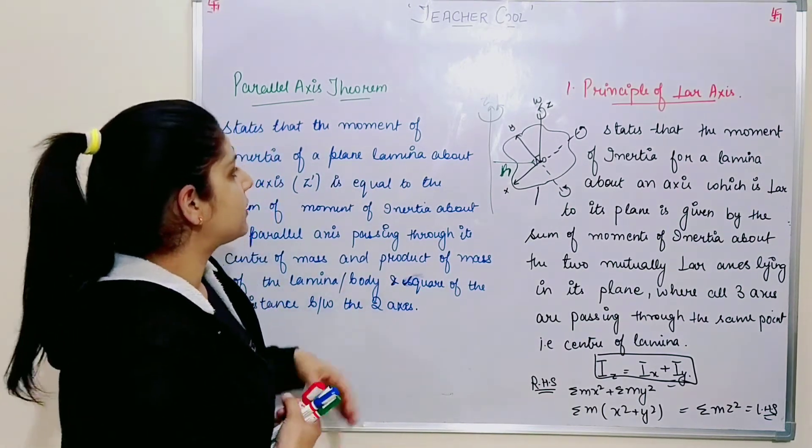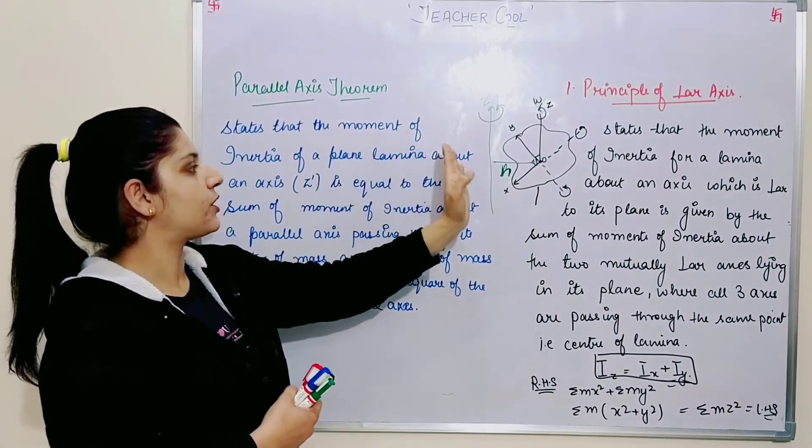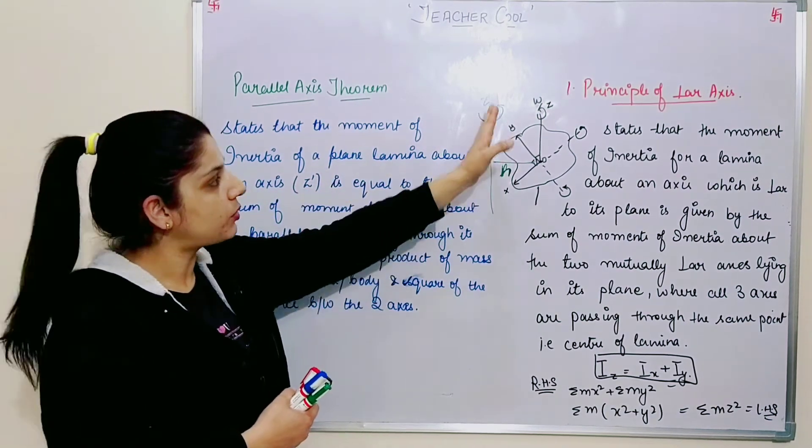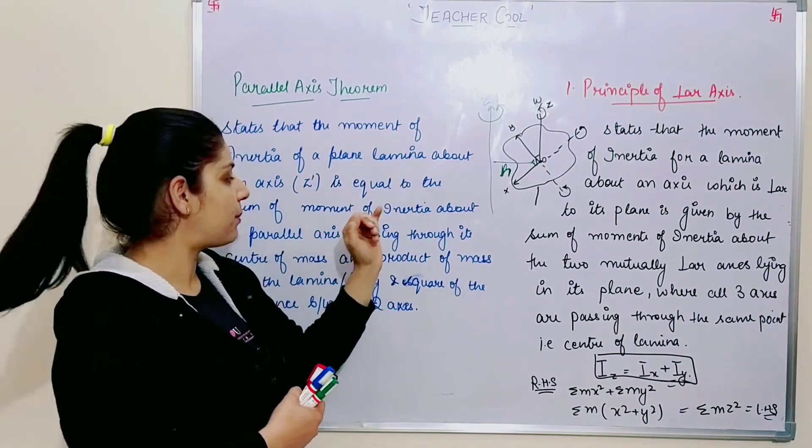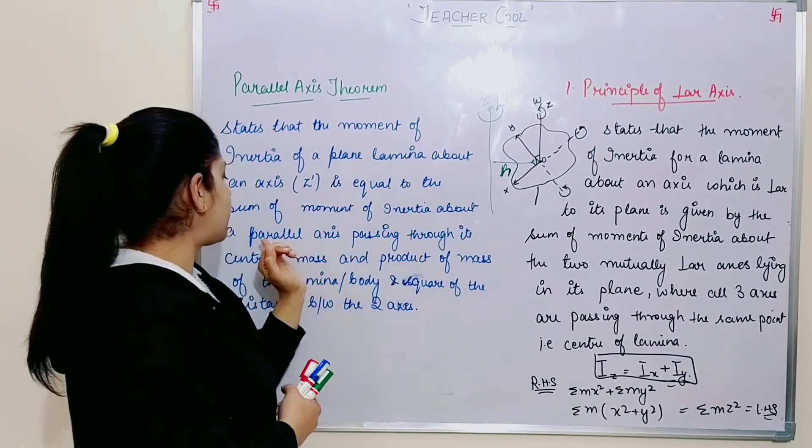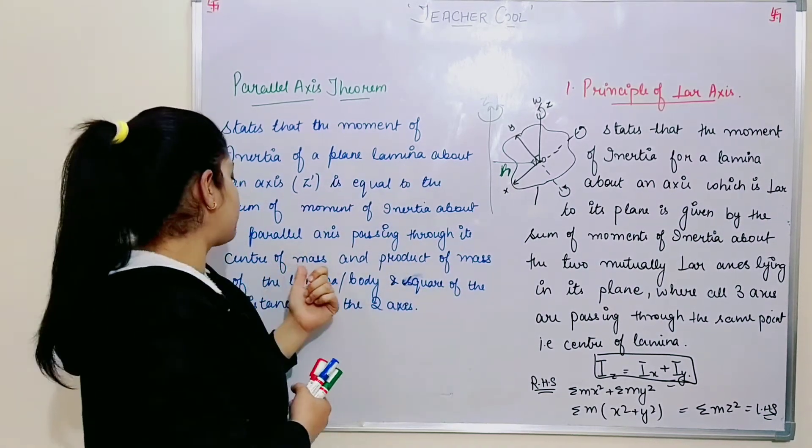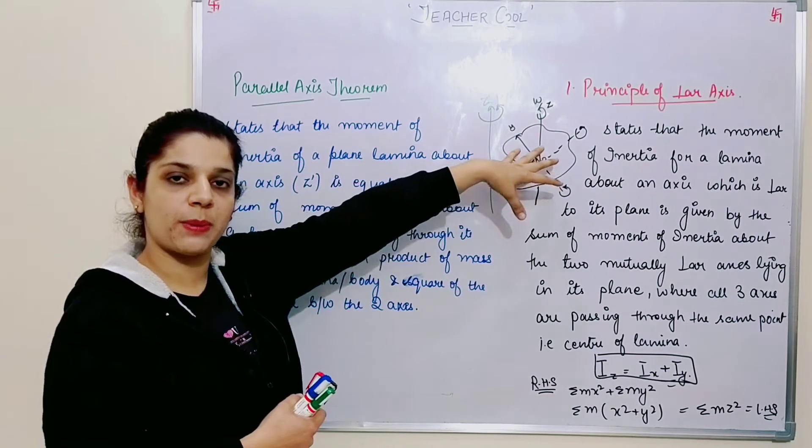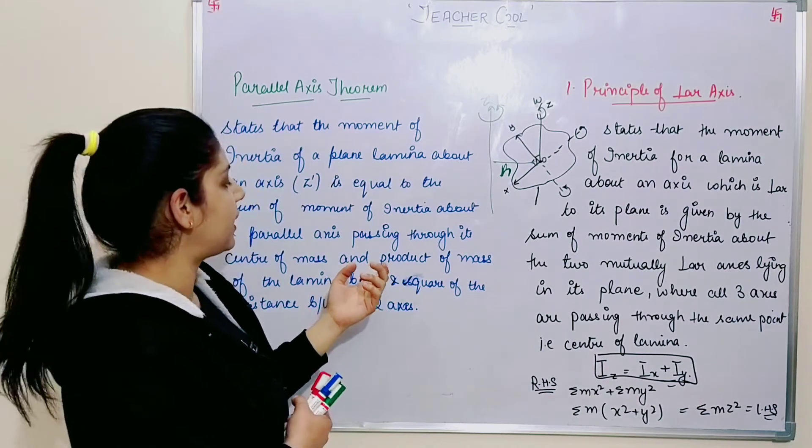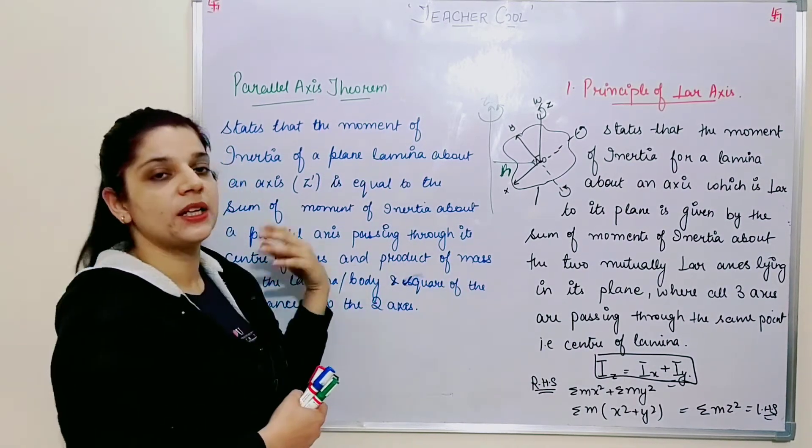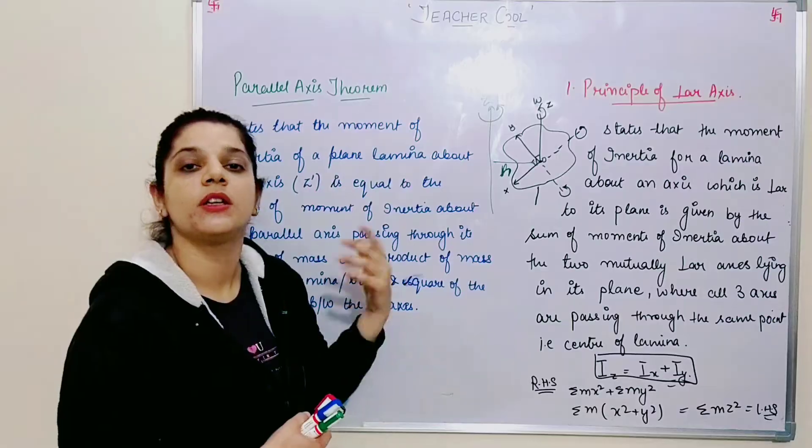The moment of inertia of this lamina about Z dash axis is equal to the sum of moment of inertia about a parallel axis, OZ parallel axis passing through its center of mass, and product of mass of the lamina or body, its total mass, and square of the distance between the two axes.